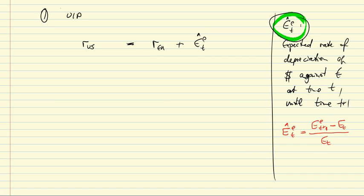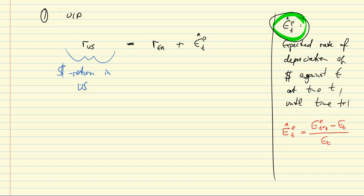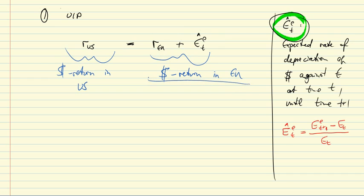On the left-hand side we have the dollar return on the investment in the US, and on the right-hand side we have the dollar return in the EU — the sum of the interest rate in Europe plus the expected depreciation, which is the expected dollar return on the euro investment.